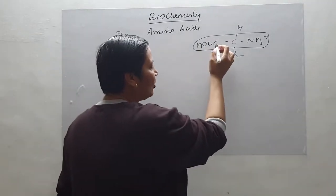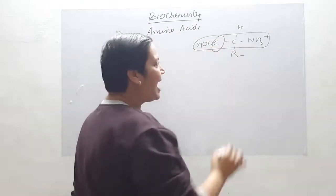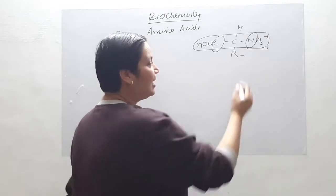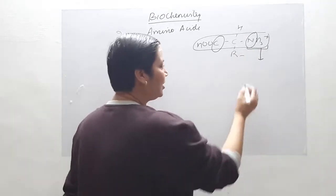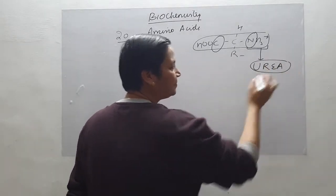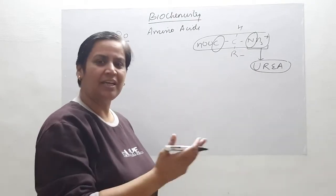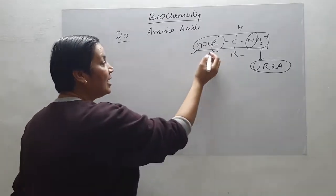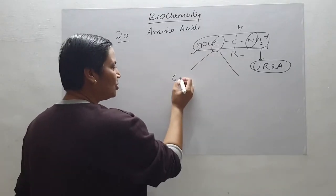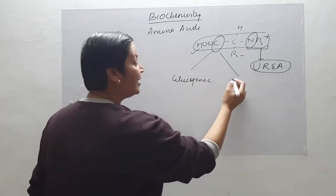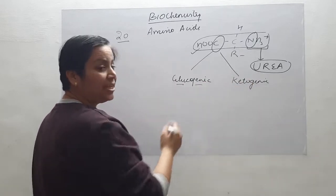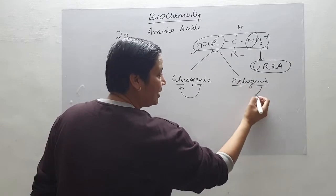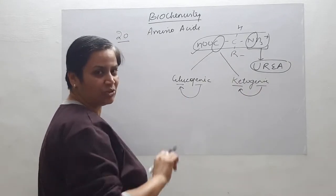Catabolism is associated with the carbon skeleton and the nitrogen skeleton. The amino group present in every amino acid undergoes transamination and deamination, leading to the formation of urea in the end. On the basis of carbon skeleton, we can divide amino acids into two groups: glucogenic amino acids and ketogenic amino acids.